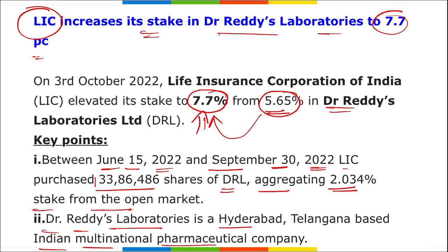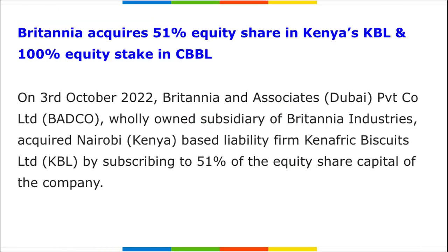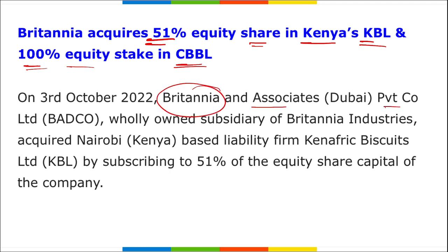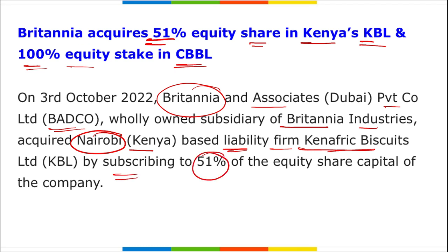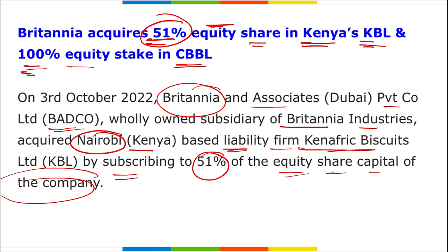Next: Britannia and its associates — a private co-subsidiary of Britannia Industries — has acquired 51% equity share capital in Kenya's Kenya Biscuits Limited (KBL), a Nairobi-based liability firm, and 100% equity stake in CBBL.